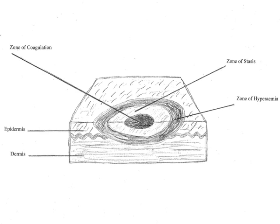When heated, proteins in the skin are denatured and cells lose the integrity of their membranes. The amount of damage is proportional both to the temperature of the burn and to the duration of contact with the heat source.